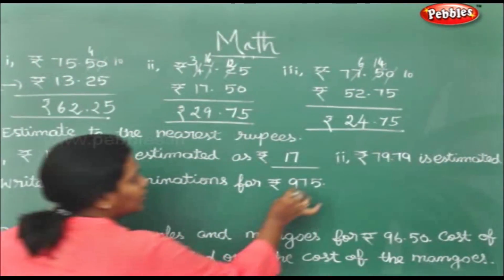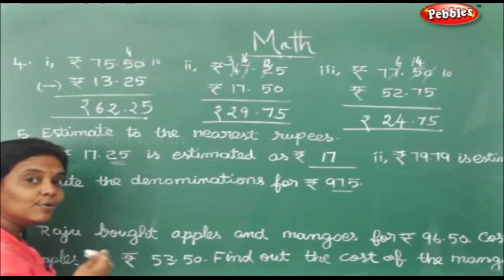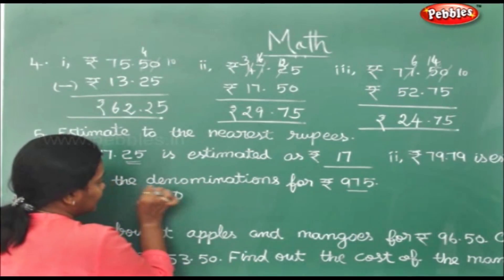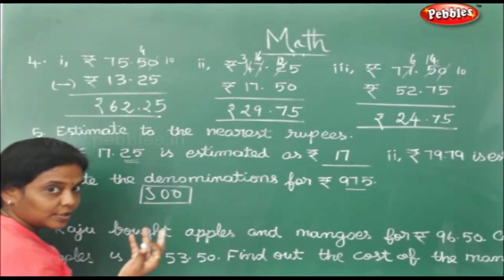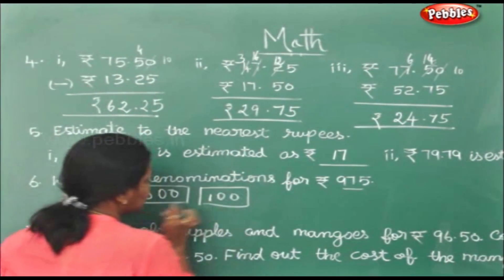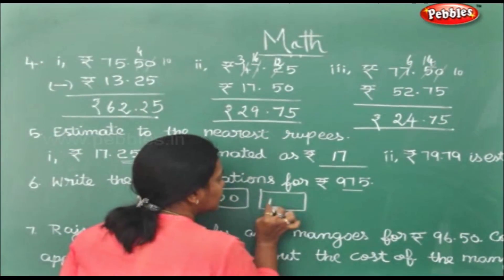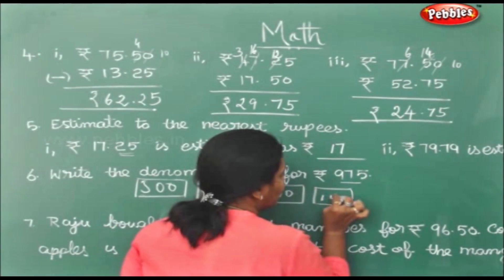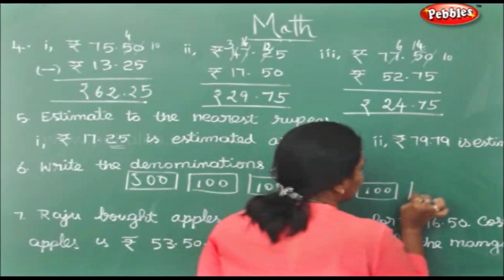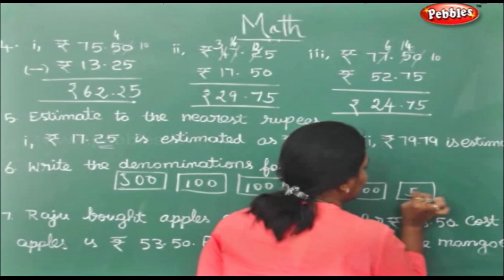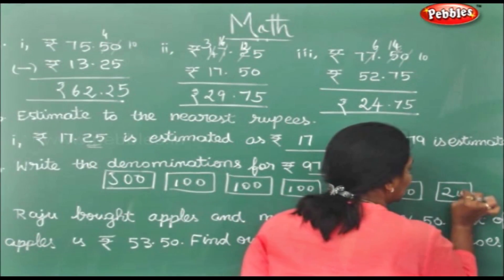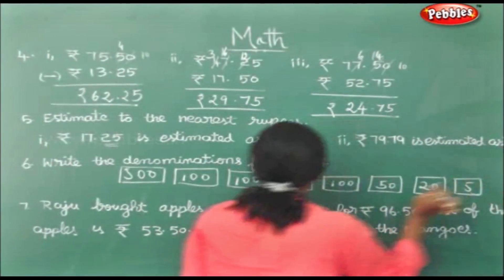Write the denominations for 975 rupees. You can use a 500-rupee note. Then four 100-rupee notes to make 900. Then a 50-rupee note to make 950. Then a 20-rupee note and a 5-rupee note to make 975.